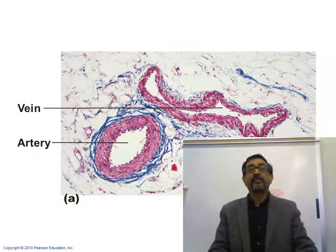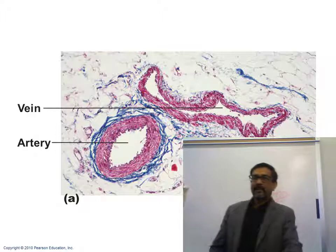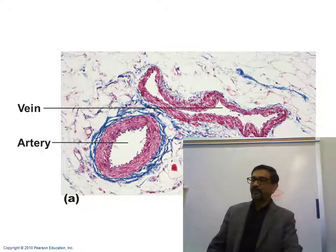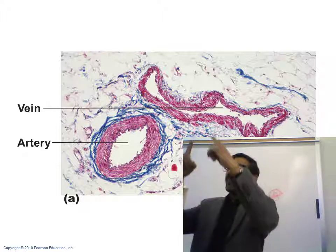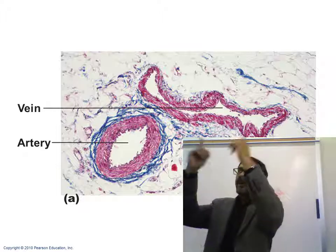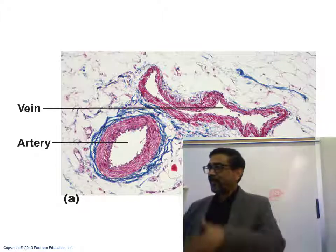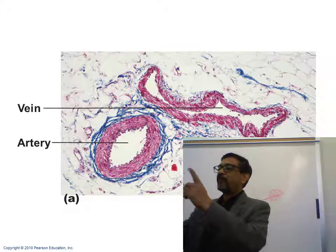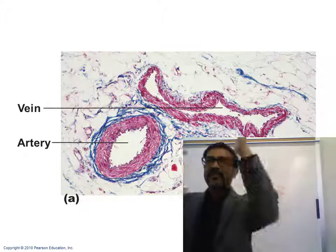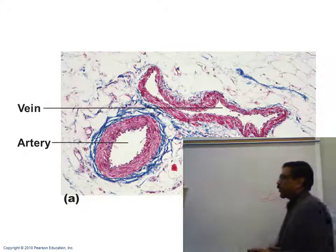Inside large veins you have valves; inside arteries you don't. Particularly in the large veins of your leg — the great saphenous and small saphenous — many one-way valves are present. They only open upwards, so blood going up cannot go back down due to gravitational force. The valves prevent backflow in the slow venous circulation. In large veins you have many valves, but in arteries you don't need valves because the flow is fast.